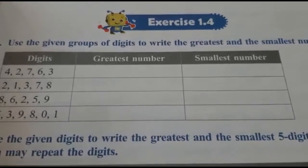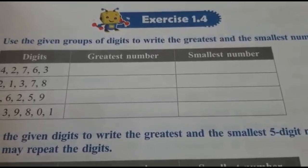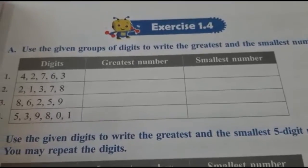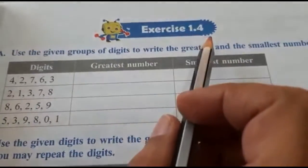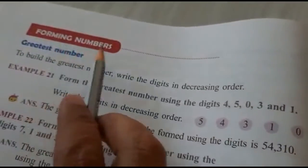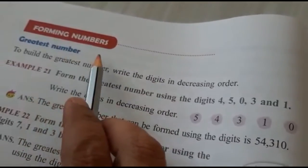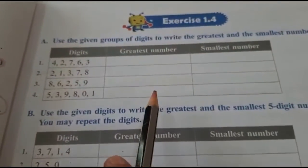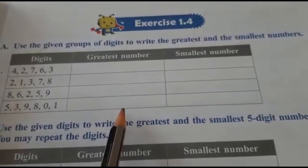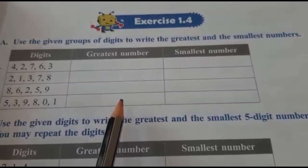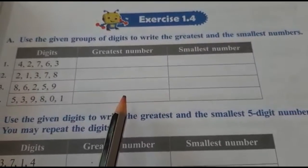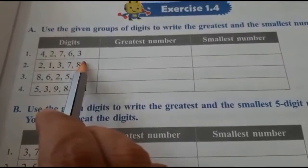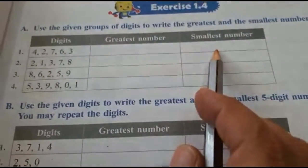Hello students, I hope you all are fine. We are doing the place value chapter, and today we will discuss Exercise 1.4. The concept is forming numbers — how to form numbers using given digits. This concept you have done in Grade 3 also, where you made four-digit numbers up to thousands only. But in Grade 4, there are five digits now, and you are supposed to make the greatest number and the smallest number.